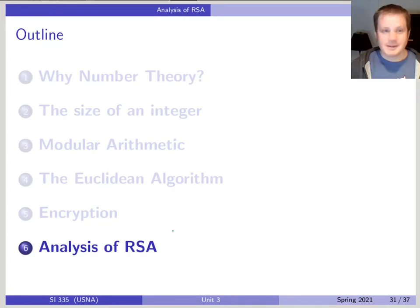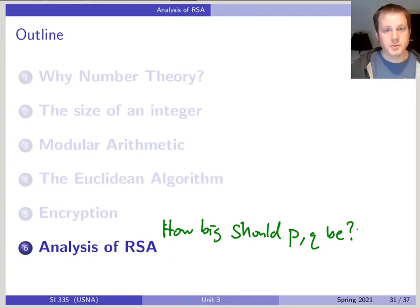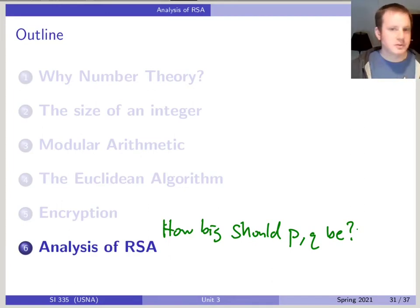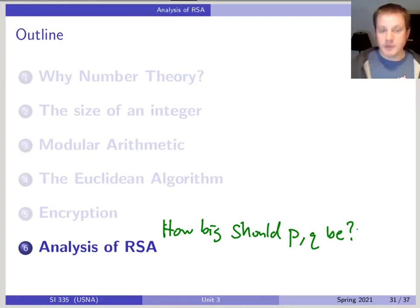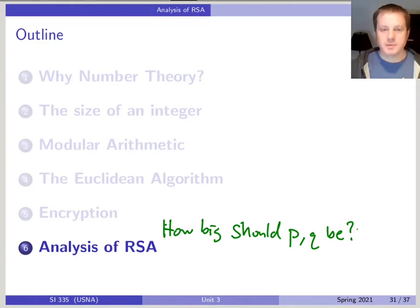Now we have to ask: how big does n need to be? How big should p and q be? These are questions we need to understand to make sure the algorithm is actually usable. If we make everything too huge, it's going to take really long just to encrypt messages and the whole scheme will be useless. But if we don't make them big enough, it'll be easy for someone to factor that number and crack it.